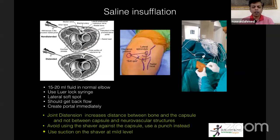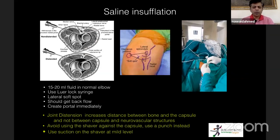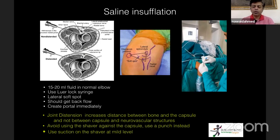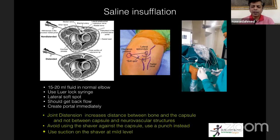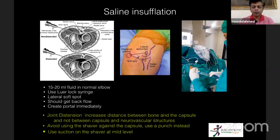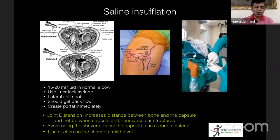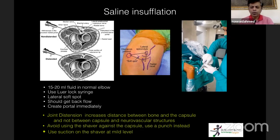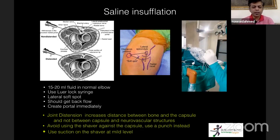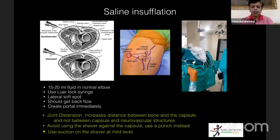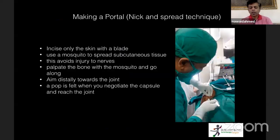Once you get a nice backflow, you're sure the joint is distended, then create your portal immediately. An important point: joint distension increases the distance between the bone and capsule, not between the capsule and the neurovascular structures. So do not use the shaver against the capsule — use a punch instead. If you must use the shaver, use it at a very mild suction level.